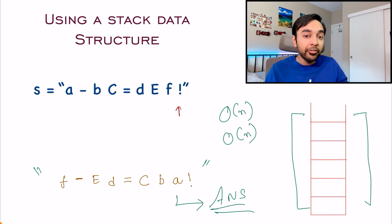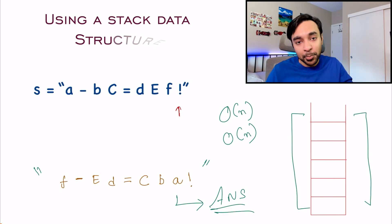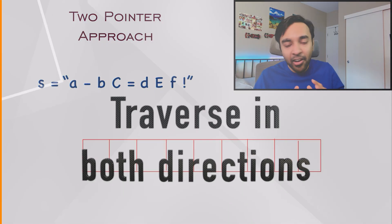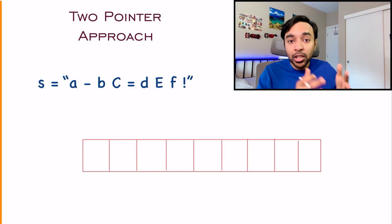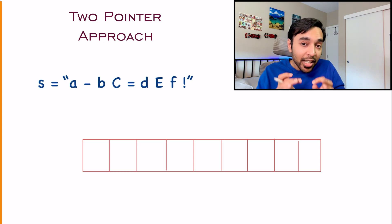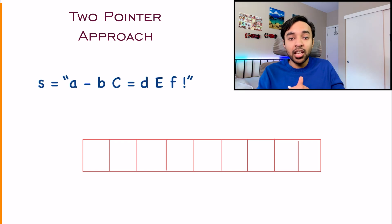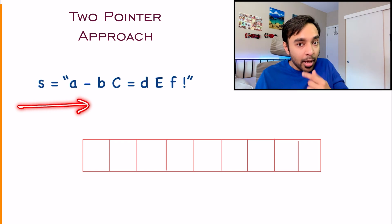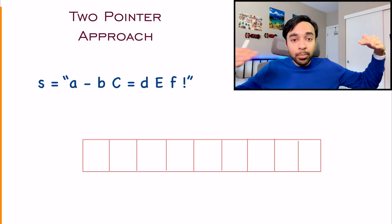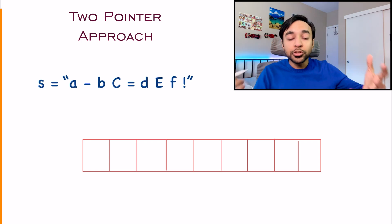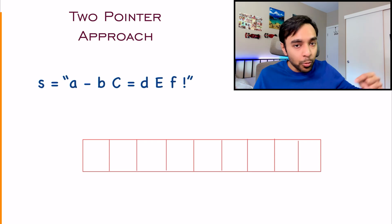There is one more method by which you can reduce the number of traversals required, and that is the two-pointer approach. Once again, I have my sample string over here. The question you should ask is: how would I even know that I can use the two-pointer approach? Well, the question itself is giving you a hint. You have to tell me the reverse string, so you generally iterate forward, but upon reversing, you have to look at the last character first — meaning you have to go in both directions. So why not do them both at once? That gives you a hint that you can use the two-pointer approach.